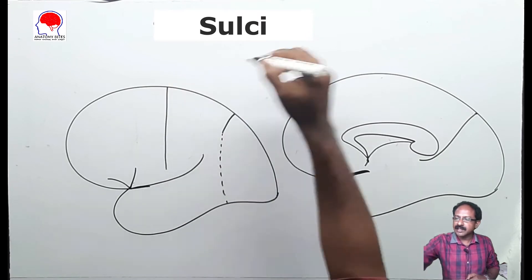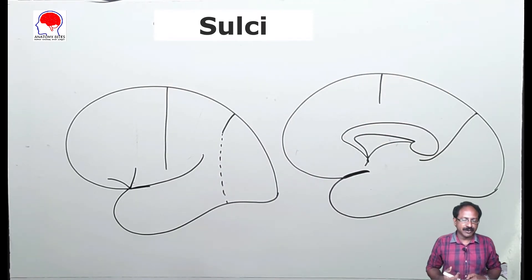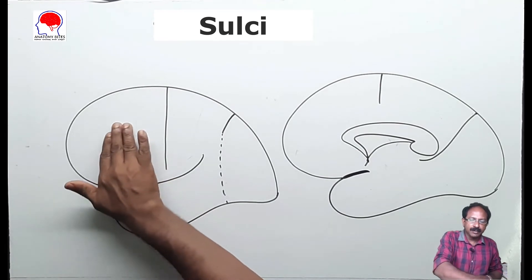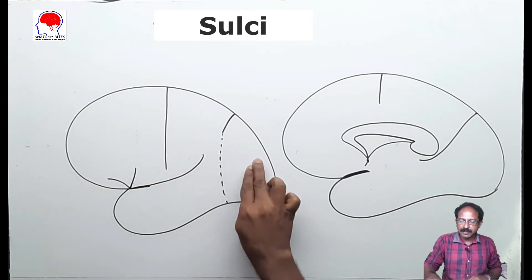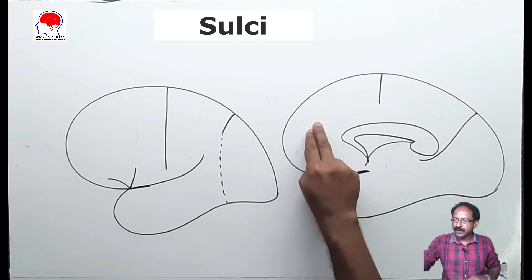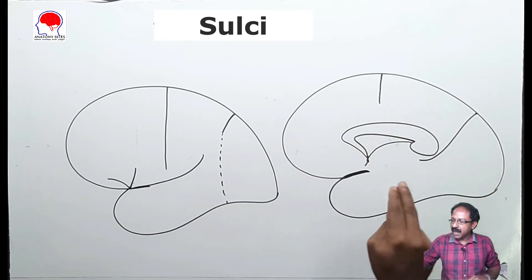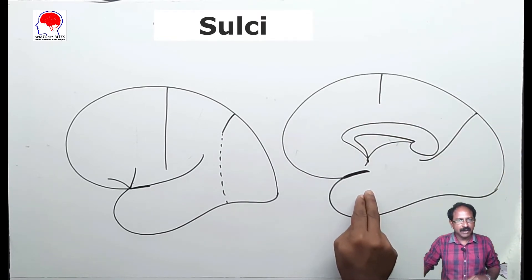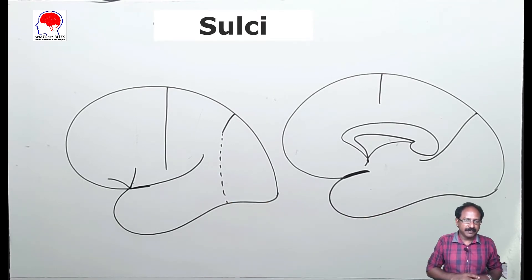Similarly, the central sulcus is extending to the medial surface also. Here we have four lobes: the frontal lobe, parietal lobe, occipital lobe and temporal lobe — on both the superlateral and medial surfaces. Now we will see the sulci present in each lobe.